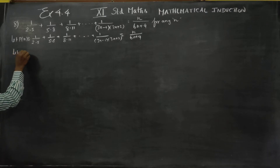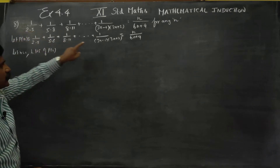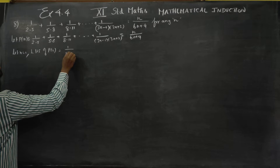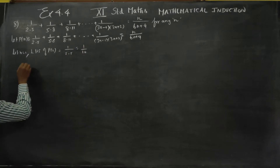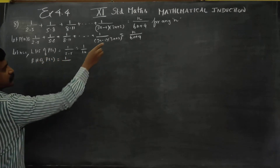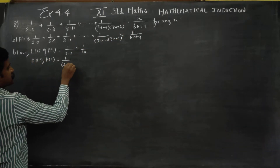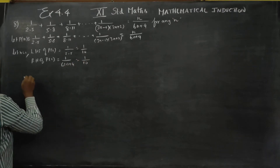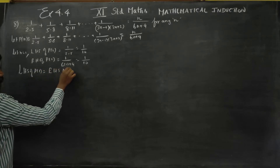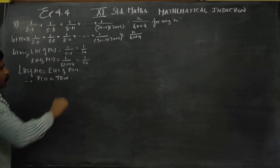Let n is equal to 1. LHS of P of 1 — here n is 1, substitute to get 1 into 2 into 5, answer is 1 by 10. Then RHS of P of 1 is 1 by — n by 6 into 1 plus 4 — answer is 1 by 10. LHS of P of 1 is equal to RHS of P of 1. Therefore P of 1 is true.